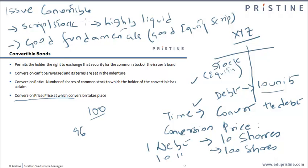So basically, what we have learned here is that any issuer would issue convertible bonds only if its script or equity stock is highly liquid and has good fundamentals, meaning it is considered a good company with a good equity script. This is how issuers or borrowers who have a highly liquid stock market presence issue convertible bonds.